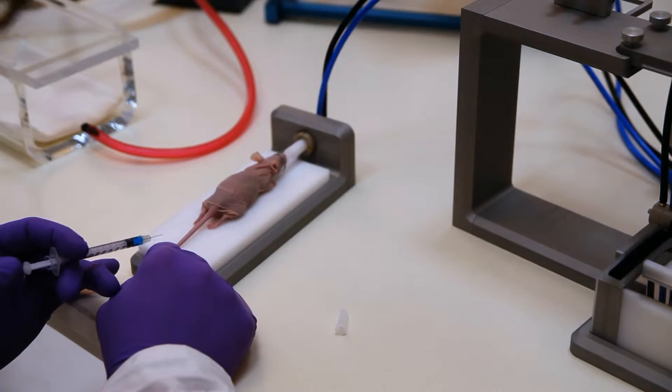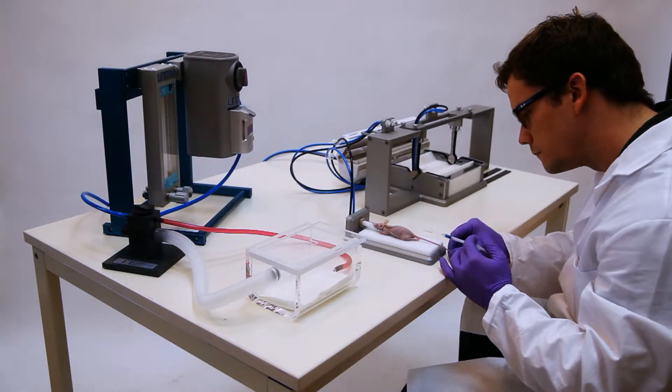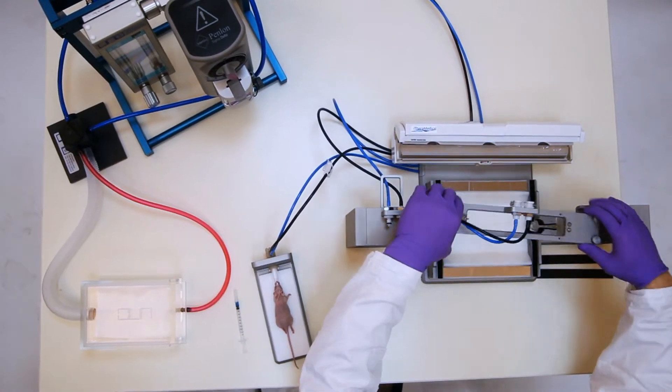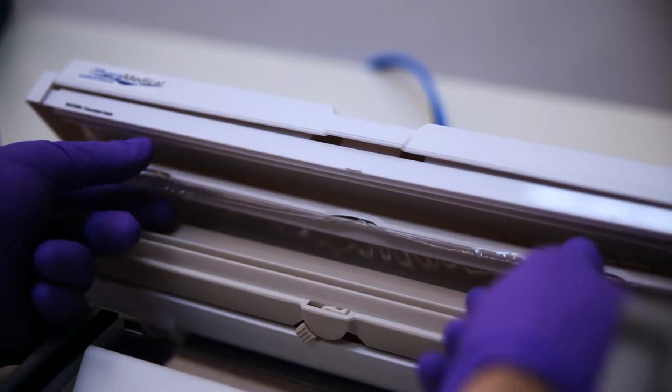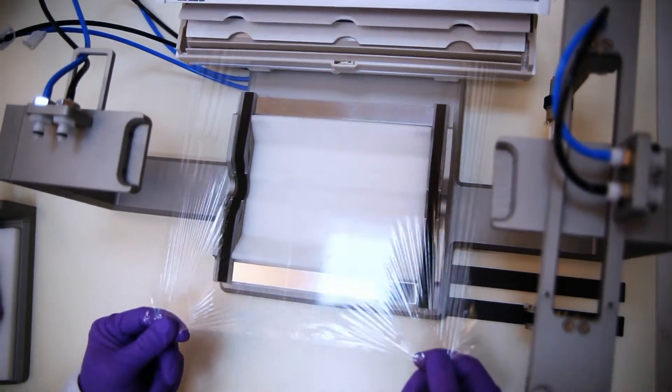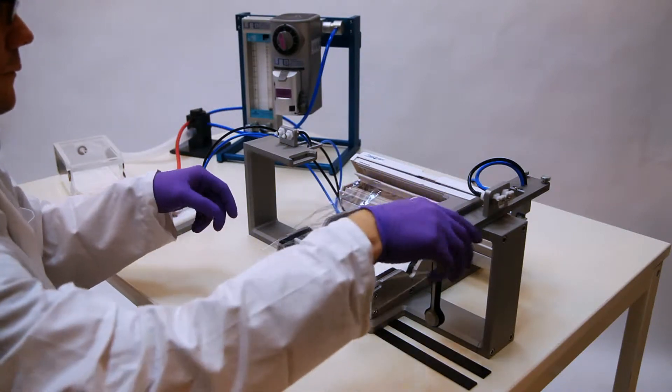Following the injection, the animal is transitioned from the injection platform to the preparation station. A plastic foil serves as a coupling membrane for the ultrasound signal and to separate the animal from water in the imaging chamber.